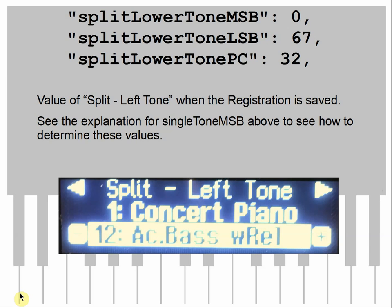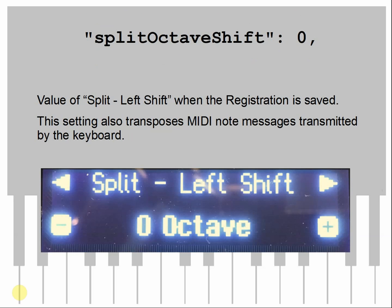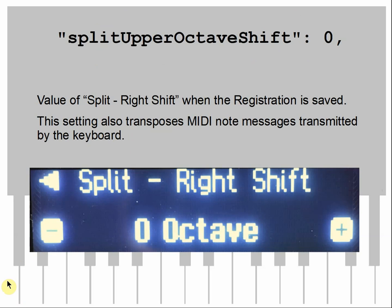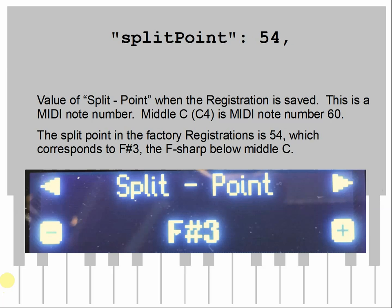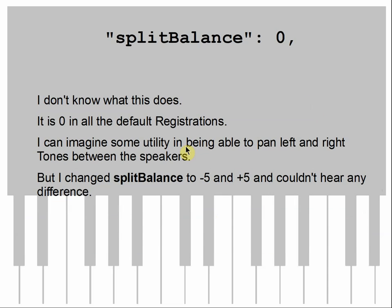If you're doing a split, the next three parameters specify the split tone — same rules as above. Split octave shift is the value of the split left shift control when saved, and it also transposes MIDI note messages sent by the keyboard for a split. Split upper octave shift does the same thing for the upper half of a split. Split point specifies where the split occurs — it's a MIDI note number. The factory split point is 54, which is the F-sharp below middle C. Split balance is zero in all of the Roland defaults and I have no idea what it does — I changed it and didn't hear any difference.